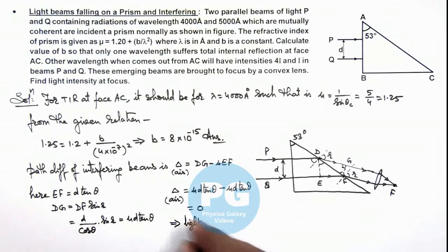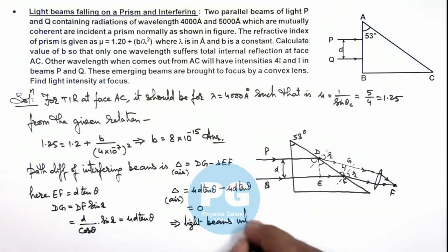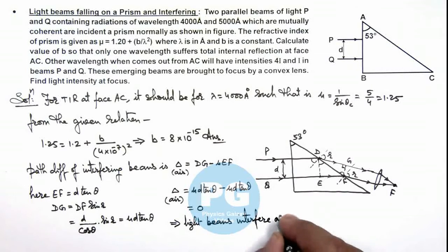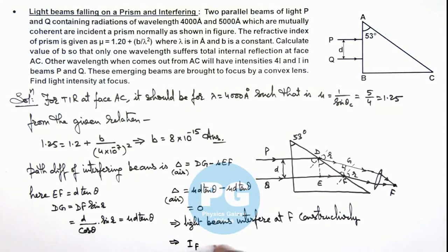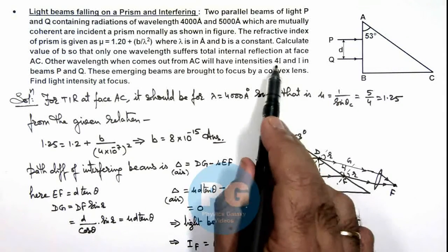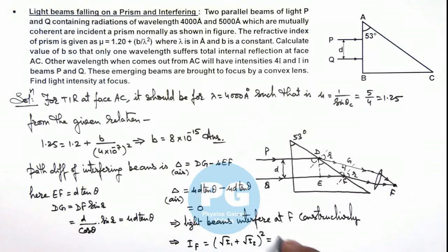This implies light intensity at focus we can give as maximum intensity which is (√i₁ + √i₂)². And i₁ i₂ are given as 4i and i. So this can be given as (√4i + √i)², that is equal to 9i. That is the result of this problem.